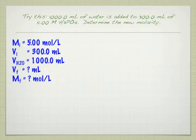And welcome back. So what do we got here? We got 1000 milliliters of water. One liter of water is added to 300 milliliters of 5 molar phosphoric acid. And again, instead of using the capital M, they do like to start using moles per liter, which I use down there at the bottom. So determine the new molarity.